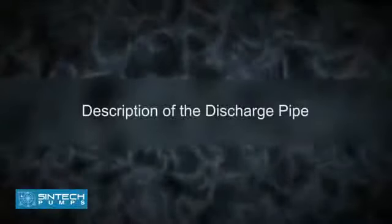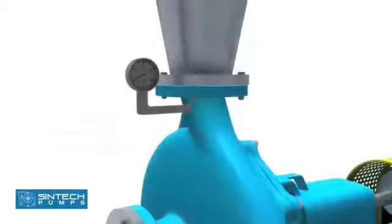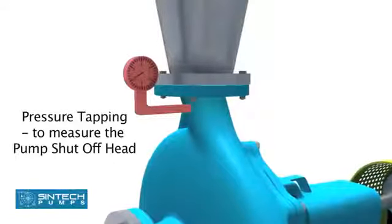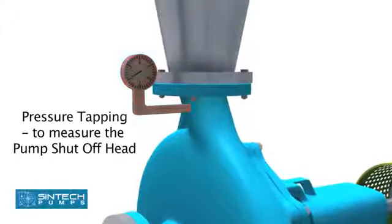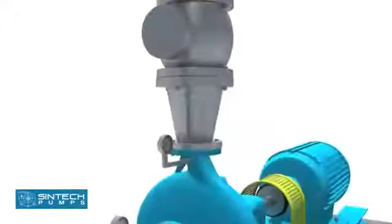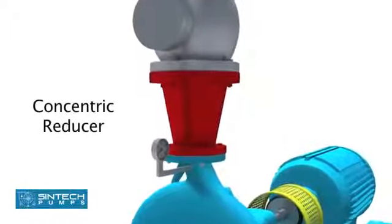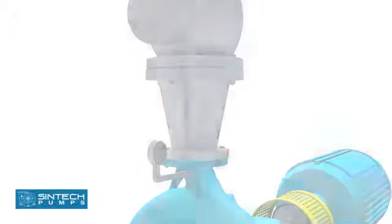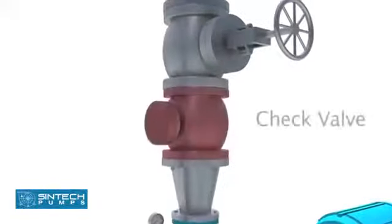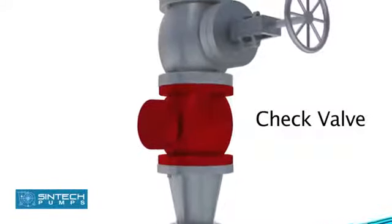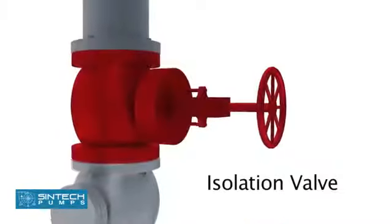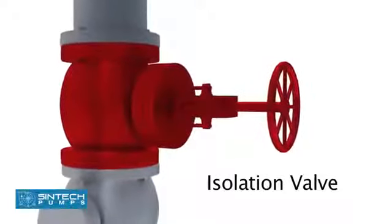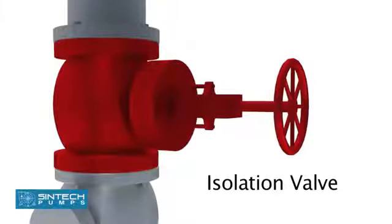Description of the discharge pipe: There should be a pressure tapping as close to the pump outlet and before the isolation valve as possible to measure the pump shut-off head. Concentric reducers are installed in the discharge pipe to minimize friction losses. The check valve used should be of non-slam type to prevent hydraulic shocks. The isolation valve is provided downstream of the check valve so these can be taken up for servicing whenever required.